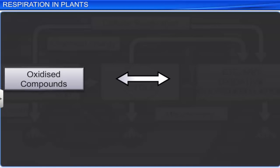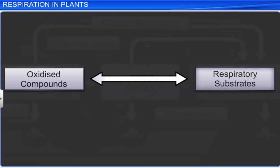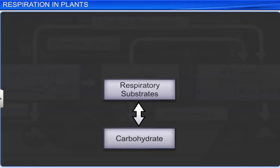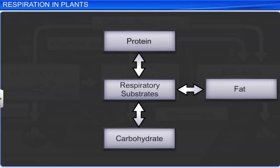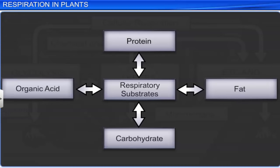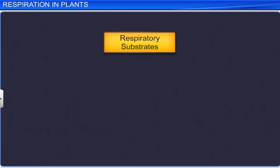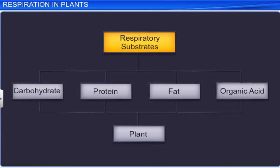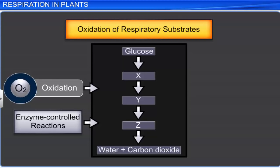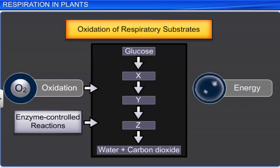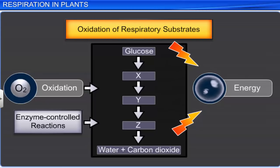The oxidized compounds are called respiratory substrates. Carbohydrates are the usual substrates for cellular respiration, but proteins, fats, and other organic acids are also used by plants in certain conditions. During the oxidation of respiratory substrates, energy is not released directly in the cell. Instead, it is released slowly in a series of steps controlled by several enzymes.